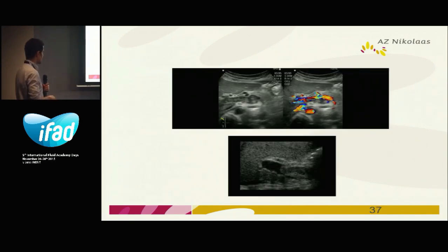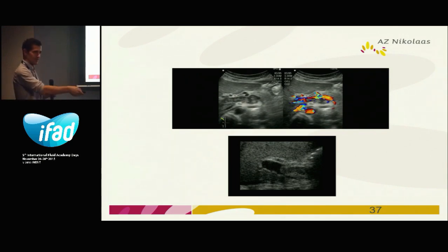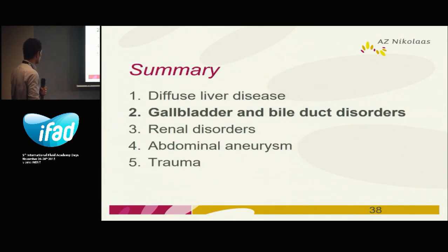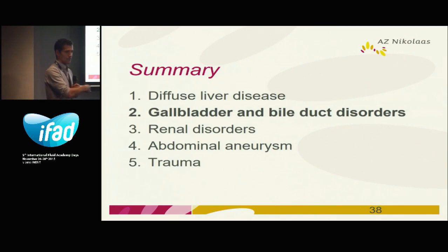Once again — once you've seen it, you will recognize it immediately. Here, this is the portal vein and here the thrombus is lying in the portal vein. This covers liver disease — let's go to gallbladder disorders.